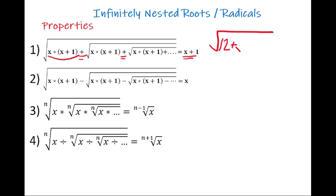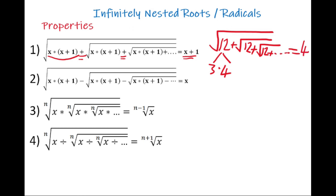So let's say we have square root of 12 plus square root of 12 plus square root of 12, and it goes to infinity. If you can factor 12 as two consecutive numbers — one of them is 3 and the other should be 3 plus 1, which is 4 — because 12 can be factored as 3 times 4, the result is equal to the bigger multiplier, which is 4.